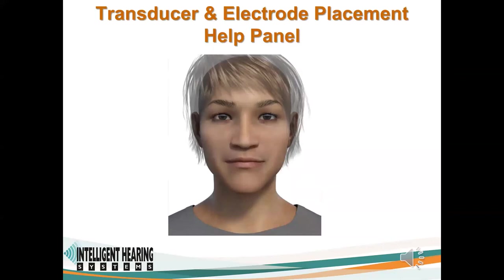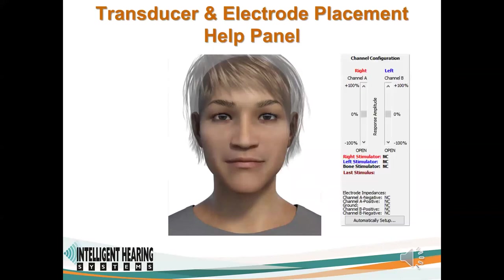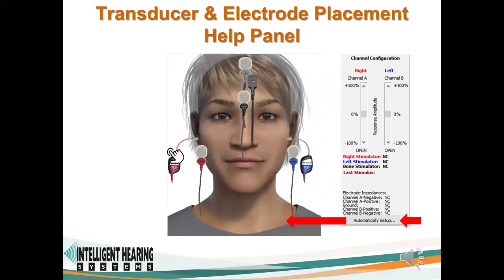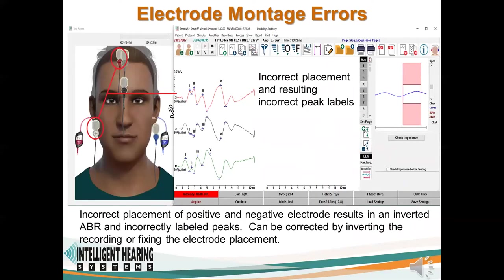The transducer and electrode placement help panel provides feedback to the student while learning how to place electrodes and transducers. The panel may be displayed or hidden from each profile to allow for training and evaluation. The automatic setup button will show new students quickly how to set up the electrodes and transducers. Incorrect placement of the positive and negative electrodes results in an inverted ABR and incorrectly labeled peaks. The student can also learn how to resolve this problem by simply inverting the recording in software.